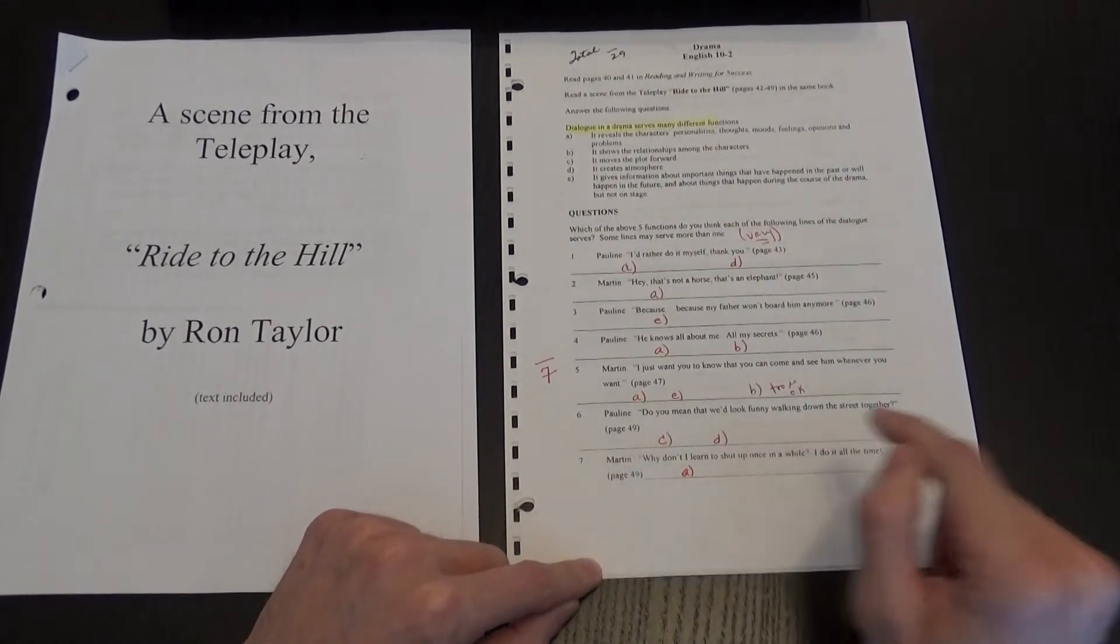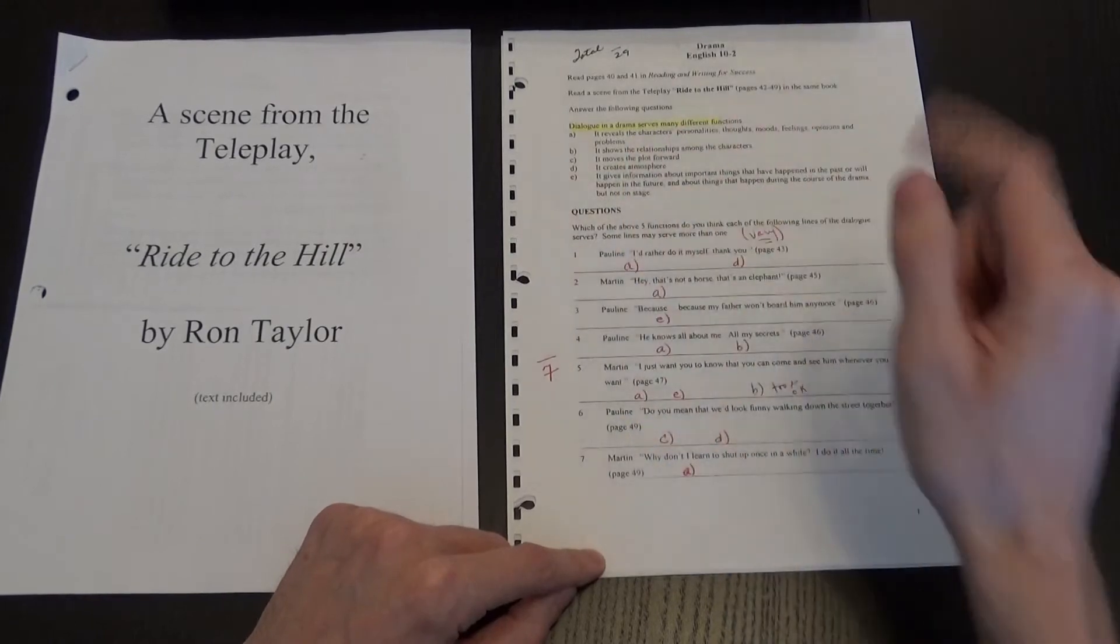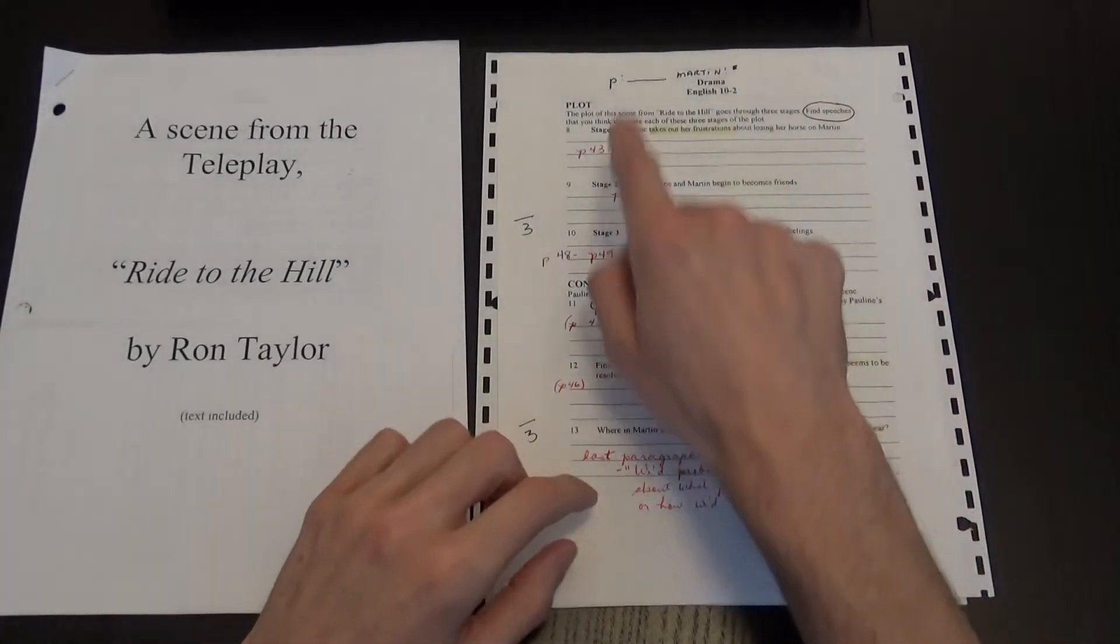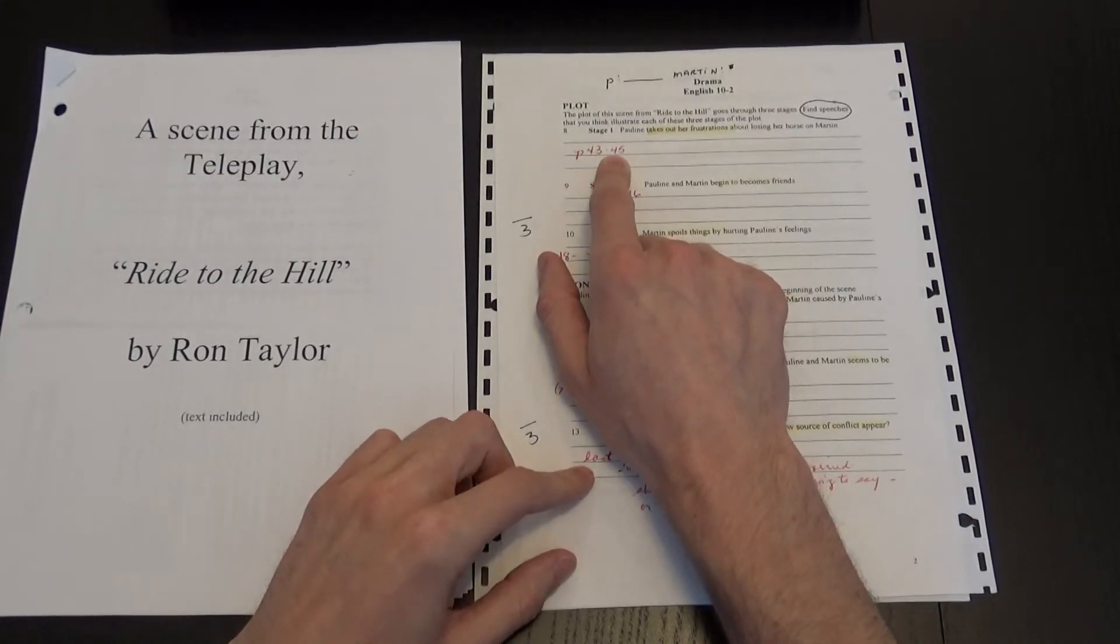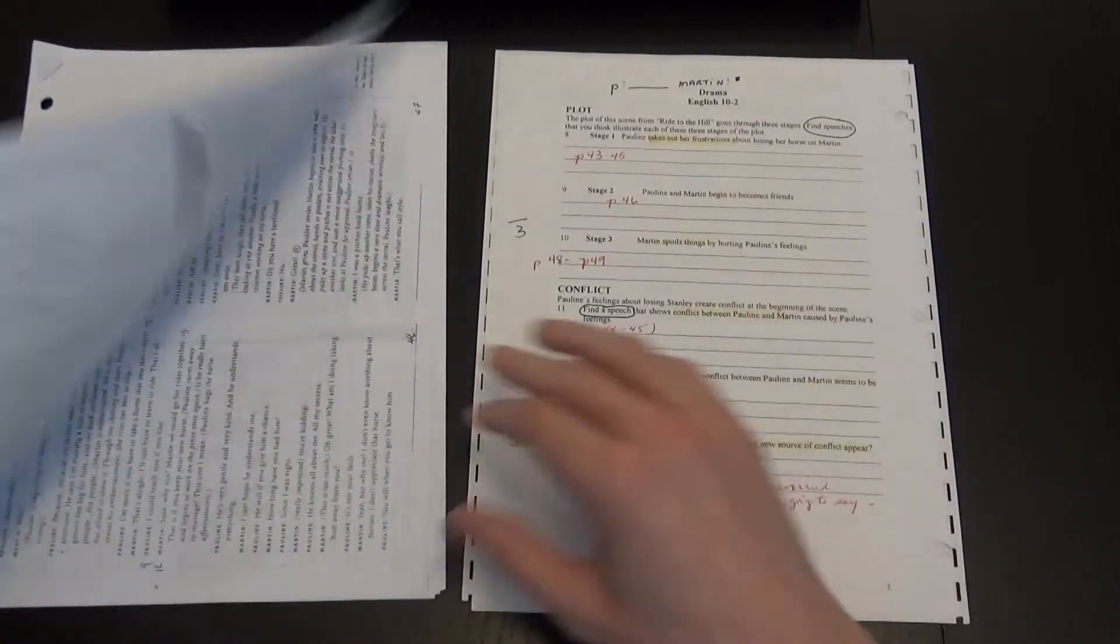And number seven, it's A, so it reveals a character's personality. For number eight, we have, so anything between page 43 and 45, there are many quotes that can be used.